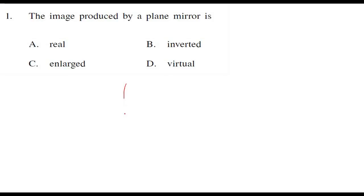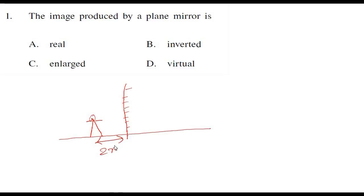We have a plane mirror here, and suppose an object is standing at a distance of 2 meters from the plane mirror. This is called object distance — the distance from the mirror to the object. Then the image of this object would be exactly the same height, and at the same distance behind the mirror. This is called image distance, and image distance is again 2 meters.